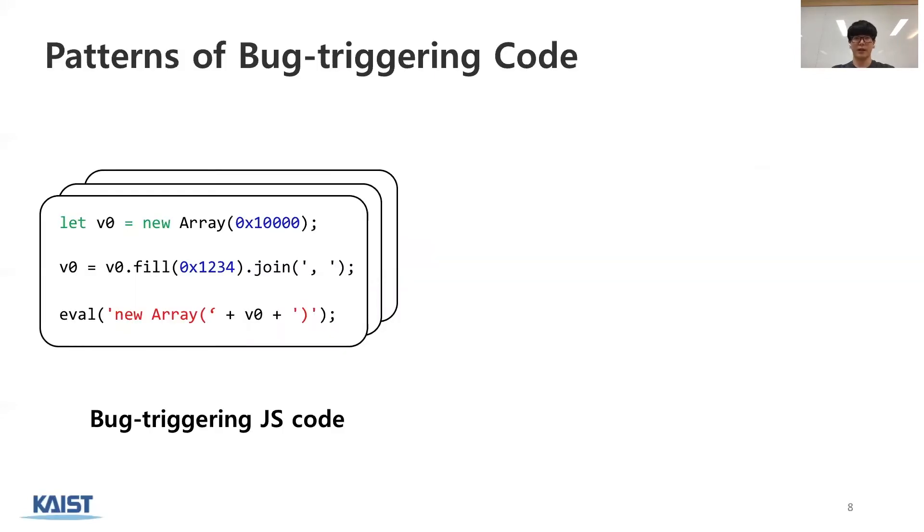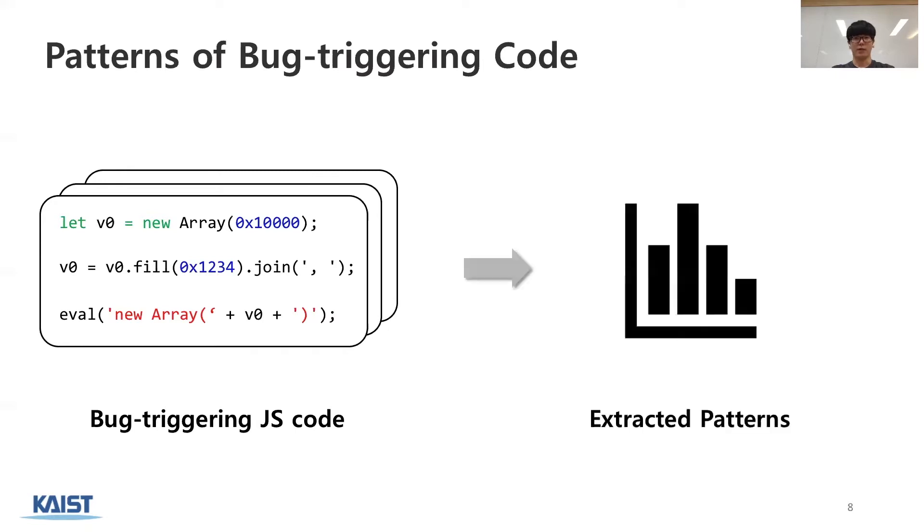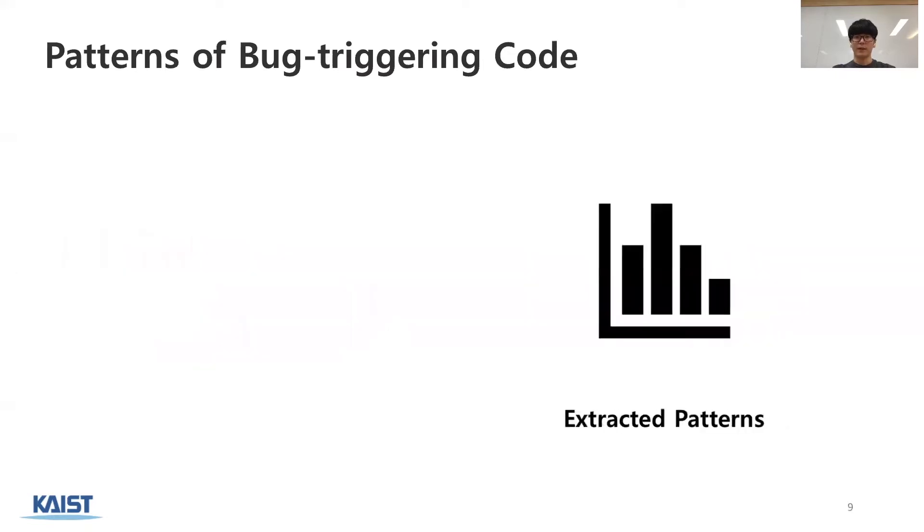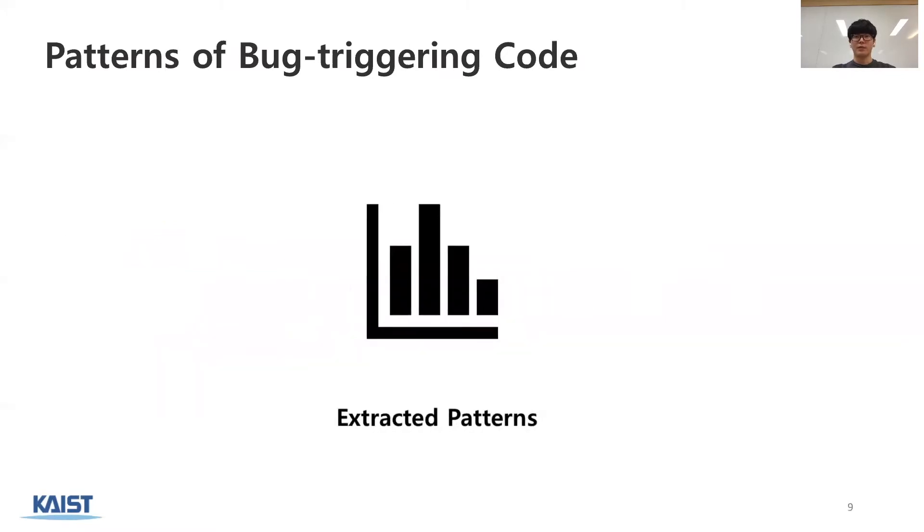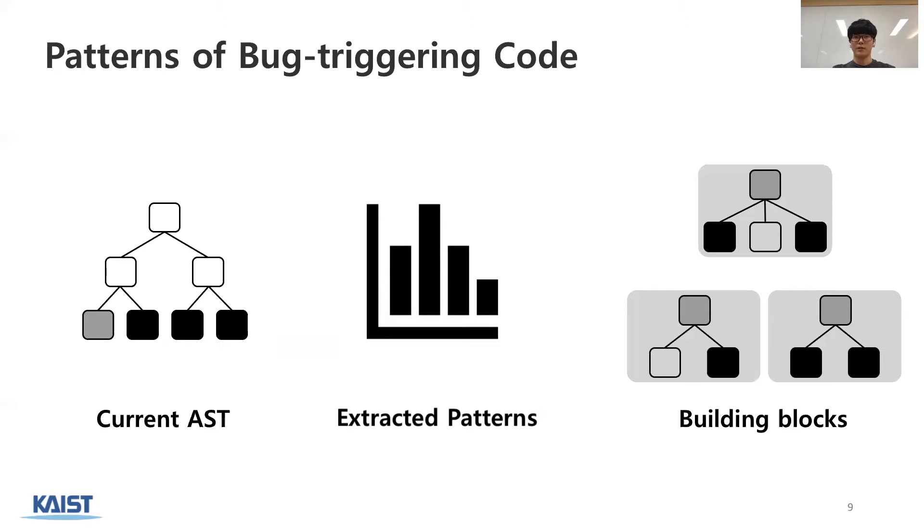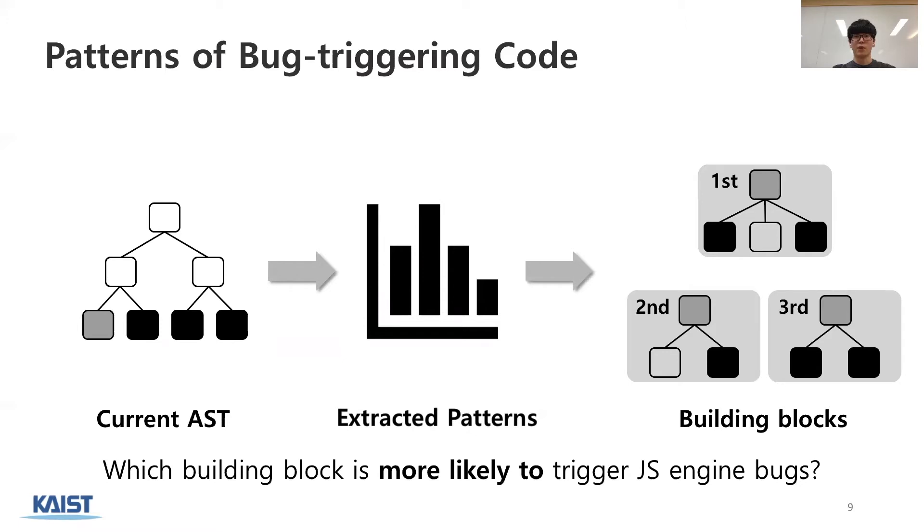So, we thought we can do much better than this. Our intuition is that if we have a set of bug triggering JS code, we can extract similar patterns from the set. Then, we can leverage these patterns to create another bug triggering JS code. For instance, from the previous scenario, we can now refer to the extracted patterns to know which building block is more likely to trigger JS engine bugs. Therefore, we can select the next building block based on these patterns.